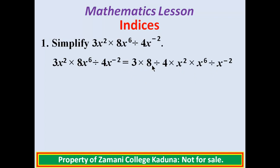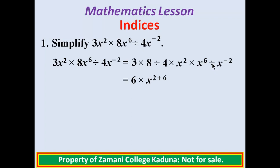We simplify the coefficients first. 3 times 8 is 24. 24 divided by 4 gives 6. So the simplified coefficient is 6. Then we bring the variables: x raised to power 2. Since this is multiplication we add the power plus 6, and since this is division we subtract negative 2.